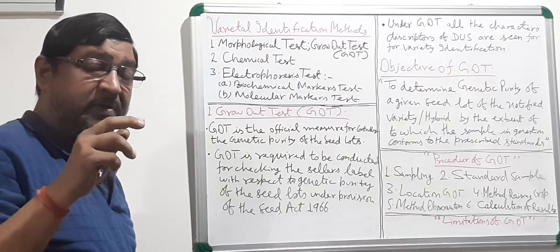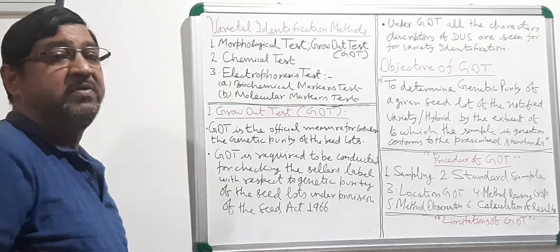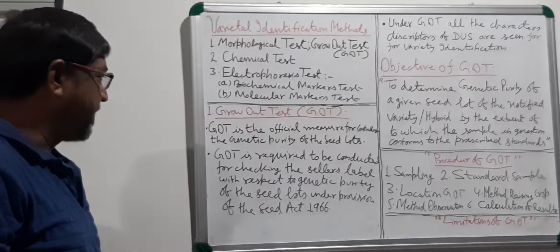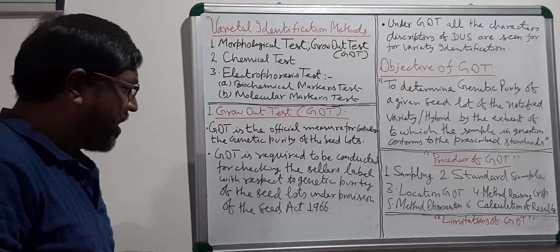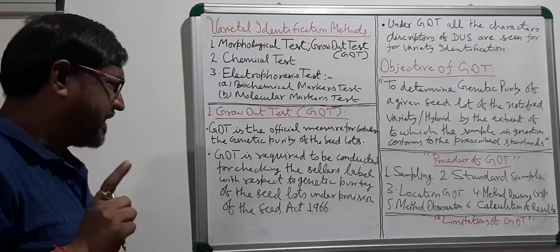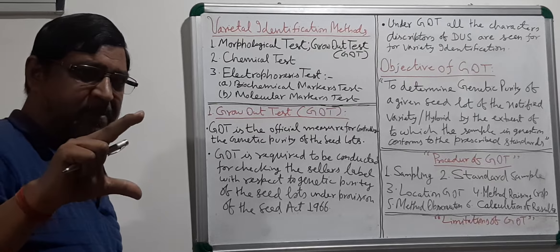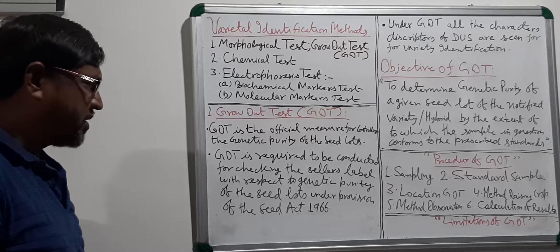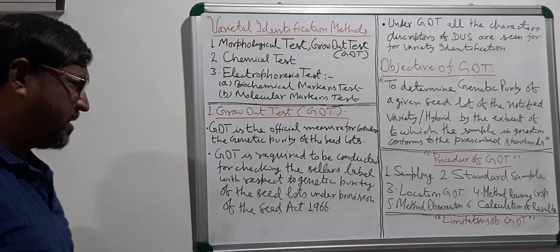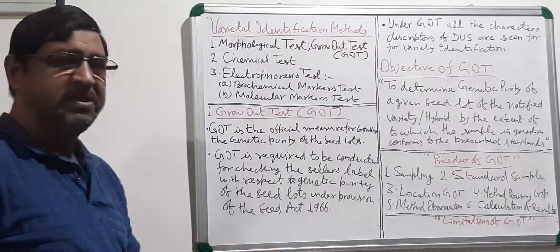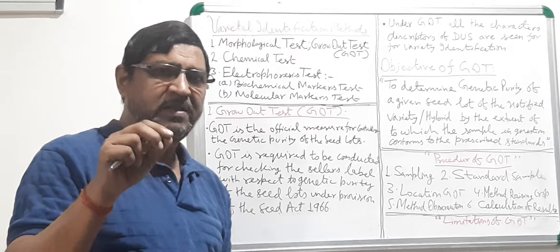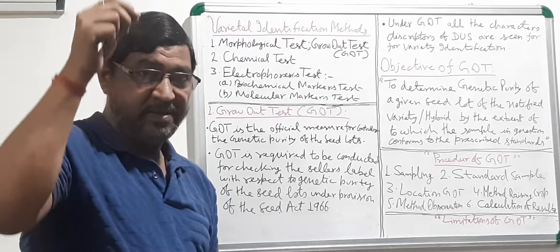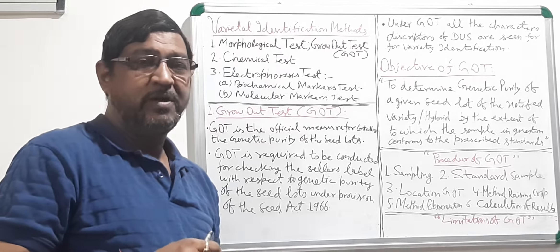GOT is only for testing the genetic purity of the variety, as it falls under varietal identification methods. GOT is required to check the seller's label — what level of genetic purity he has written on his label — with respect to the genetic purity of the seed lots under the provision of the Seed Act 1966.